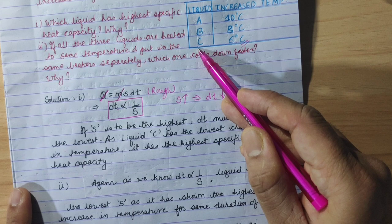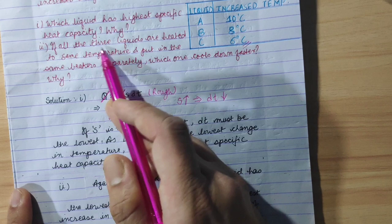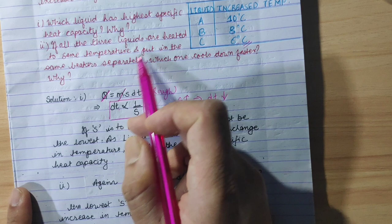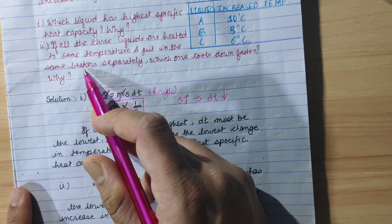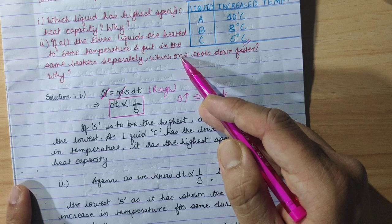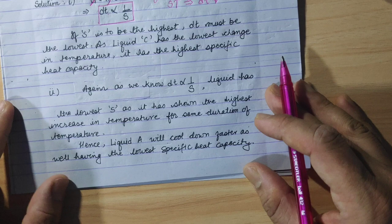Now the second question: If all three liquids are heated to the same temperature - suppose we heat them to 100°C and put them in the same beakers separately - which one cools down faster and why?